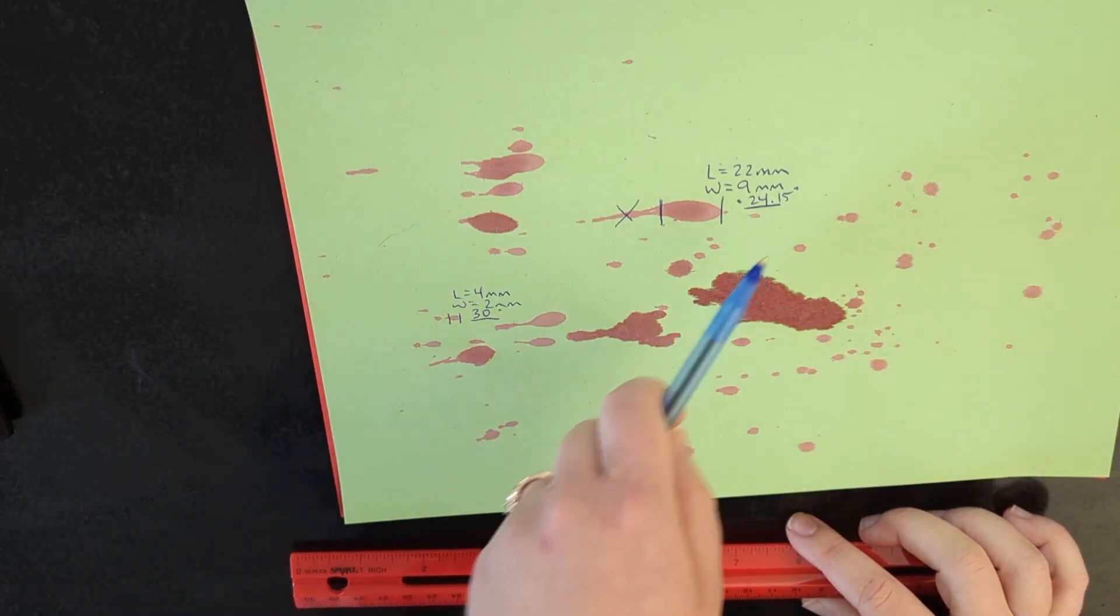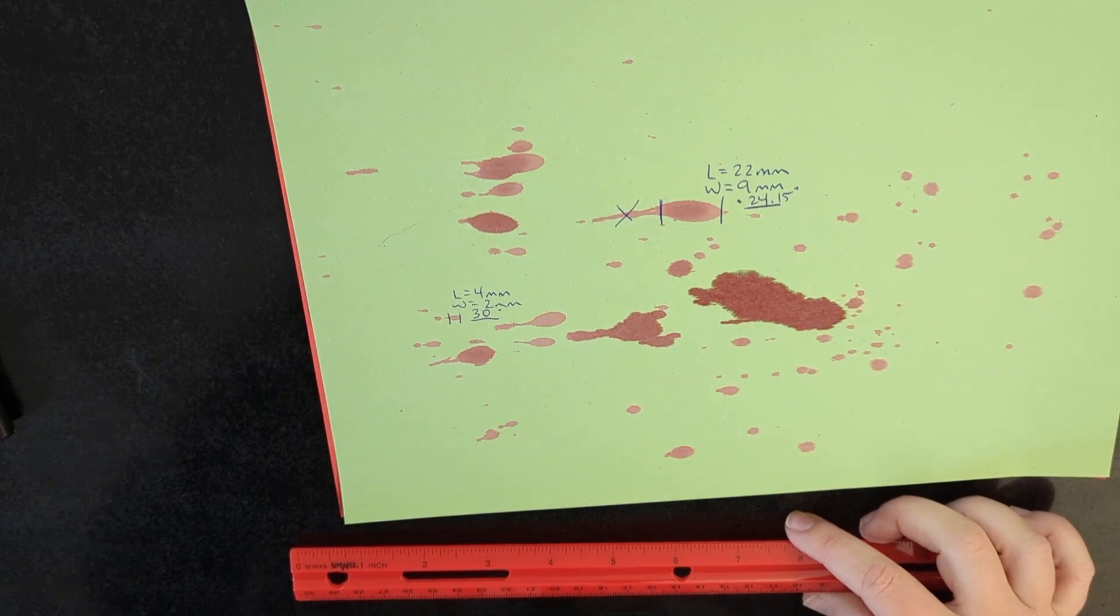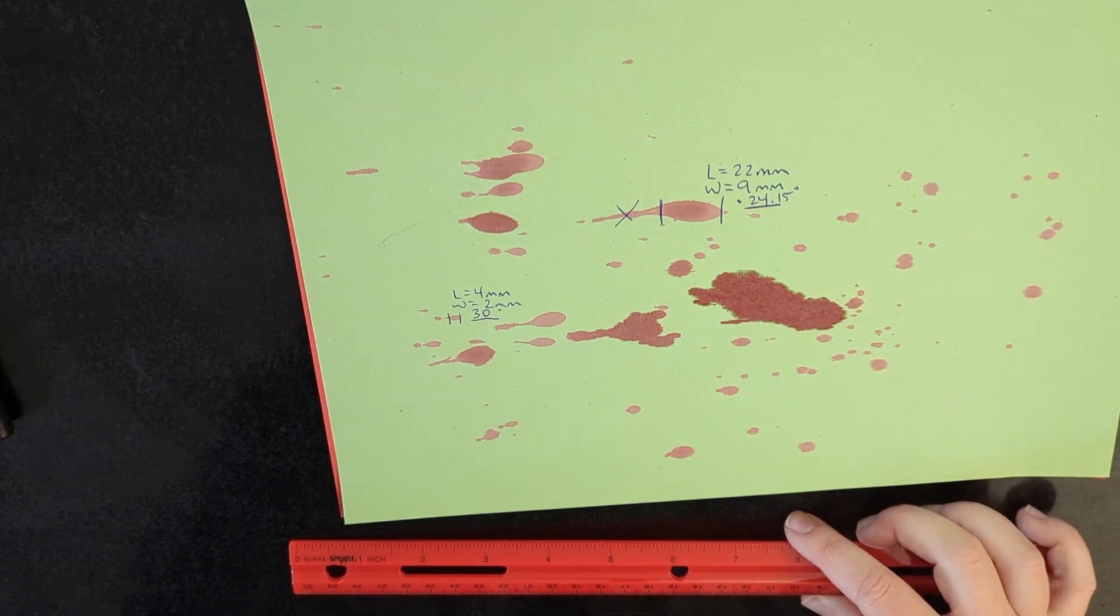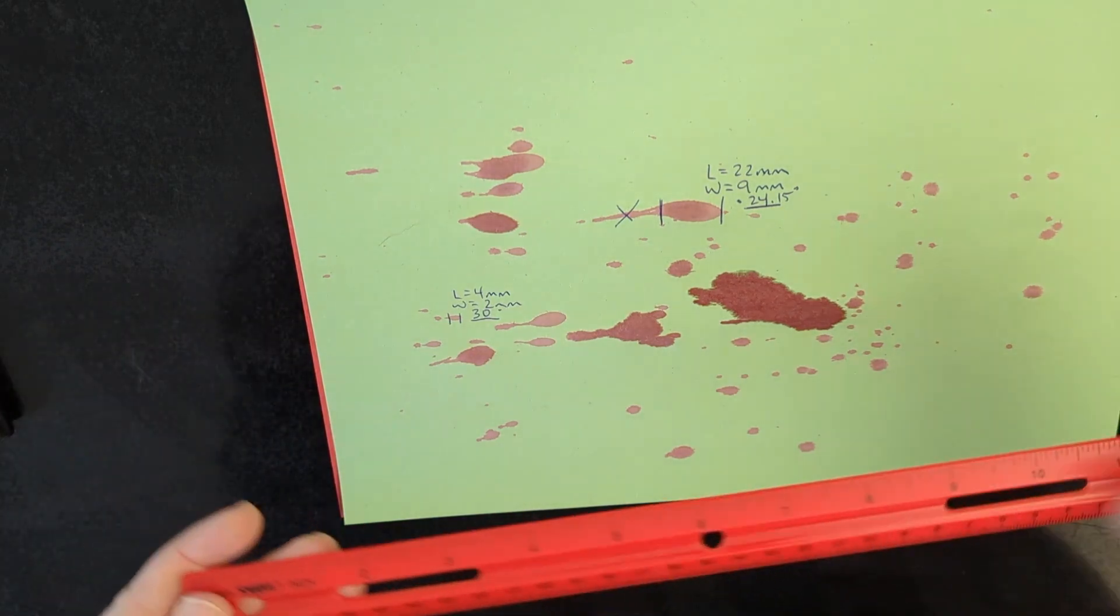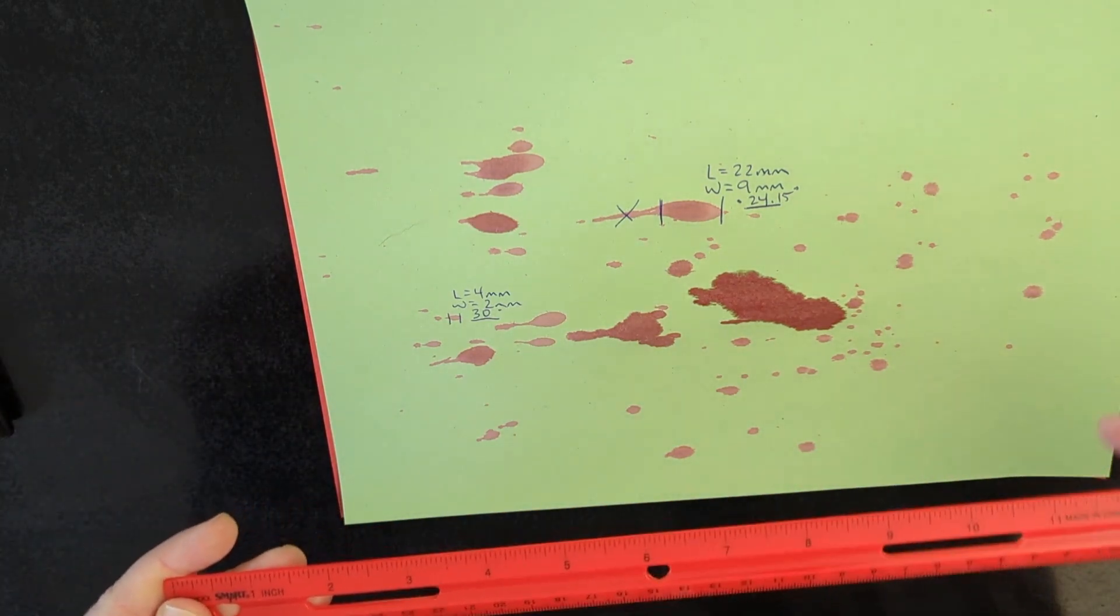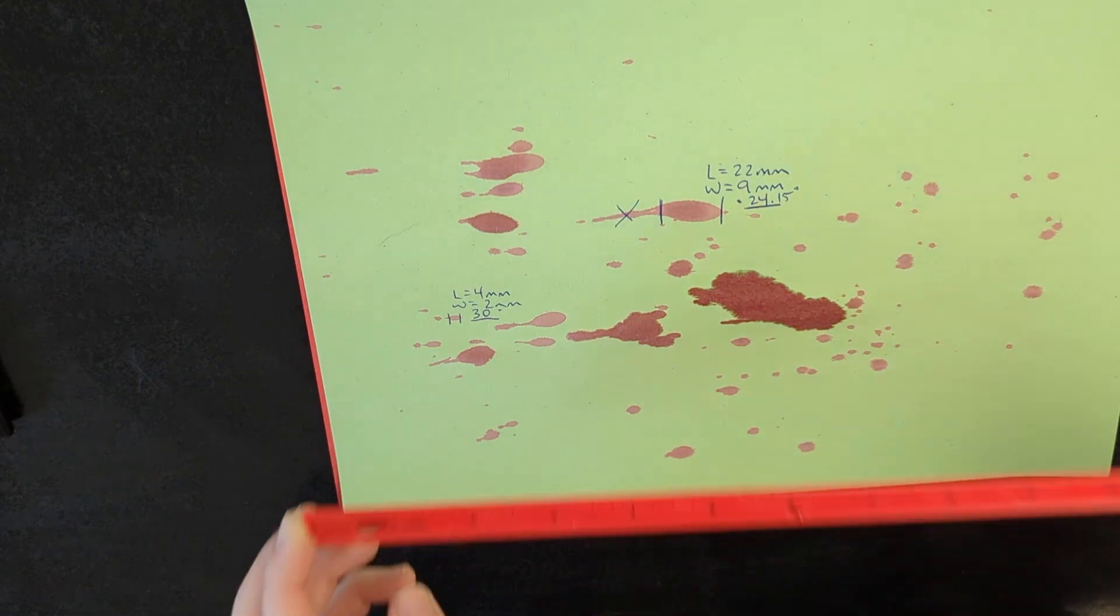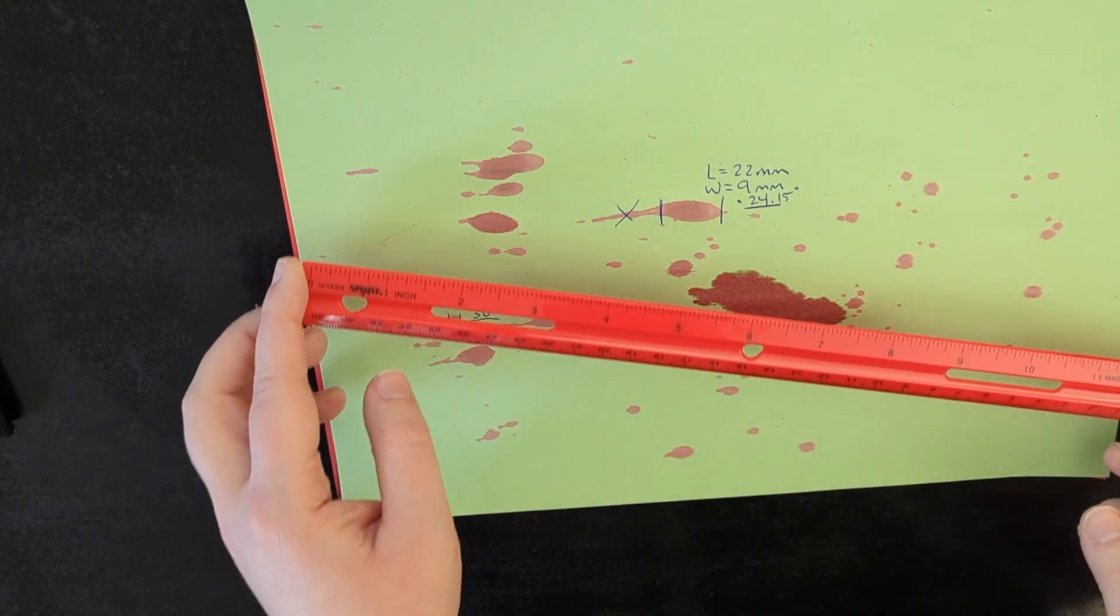Once you have enough of these measured, I do not. You would need probably about eight to be accurate. You're going to take your ruler or any long straight edge that you have, and you're going to start finding the lines of convergence.